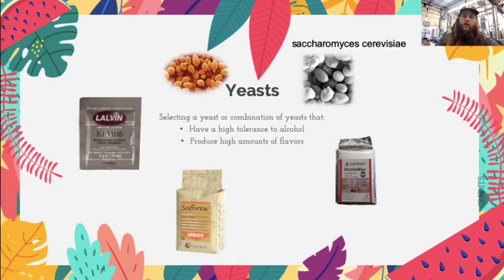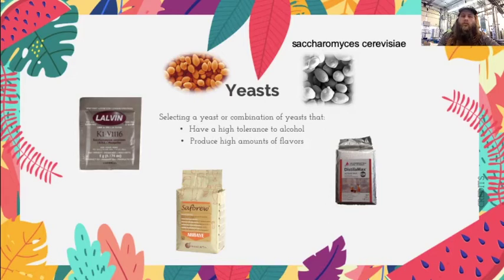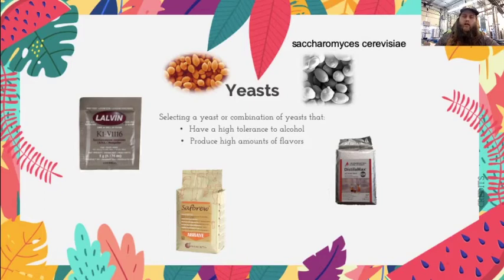Wine yeasts are a good place to start because they're commonly used in making rum due to their high tolerance to alcohol production. When you're making a rum, you'll start with a lot more available sugars and have a much higher potential to create a more alcoholic solution. Wine yeasts are also more apt to dealing with the types of sugars from sugarcane and, because of that, are more relaxed on the supplementation of nutrients.